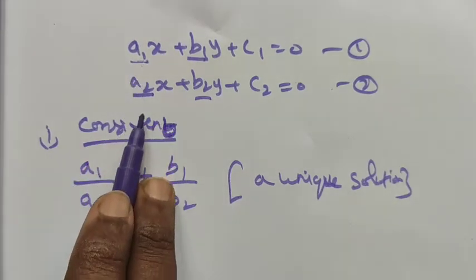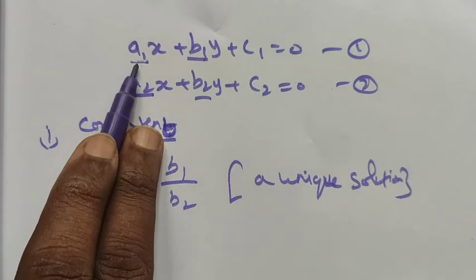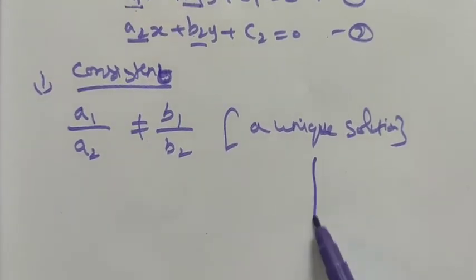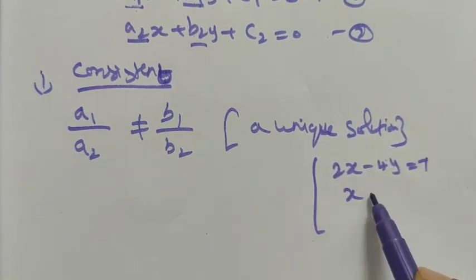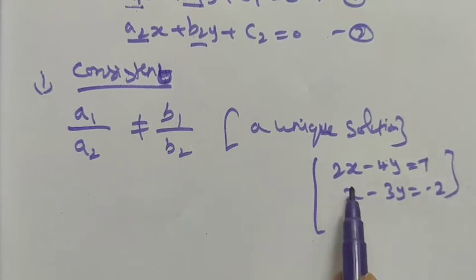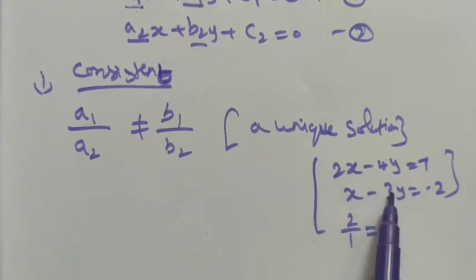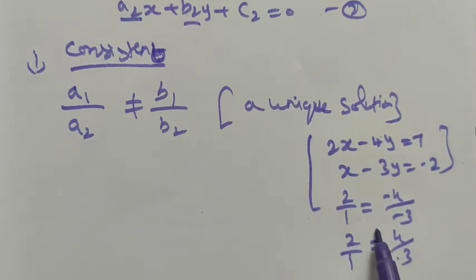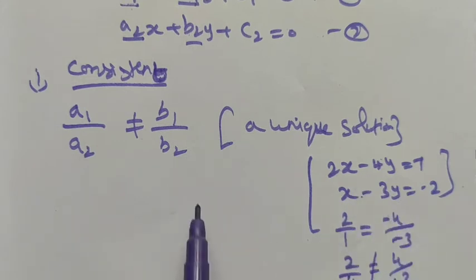If the ratio of the coefficient of x is not equal to the ratio of the coefficient of y, we have a unique solution. For example: 2x − 4y = 7 and x − 3y = −2. Here a1/a2 = 2/1 and b1/b2 = −4/−3 = 4/3. Since 2/1 ≠ 4/3, LHS ≠ RHS — so this system has a unique solution.